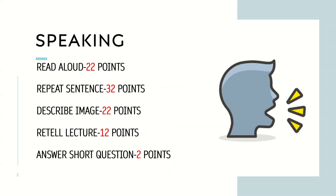The first section of the PTE is the speaking section, and the speaking section has five modules: read aloud, repeat sentence, describe image, retell lecture, and answer short question. The speaking section contributes to other sections like listening and reading, but other sections don't contribute to the speaking section.